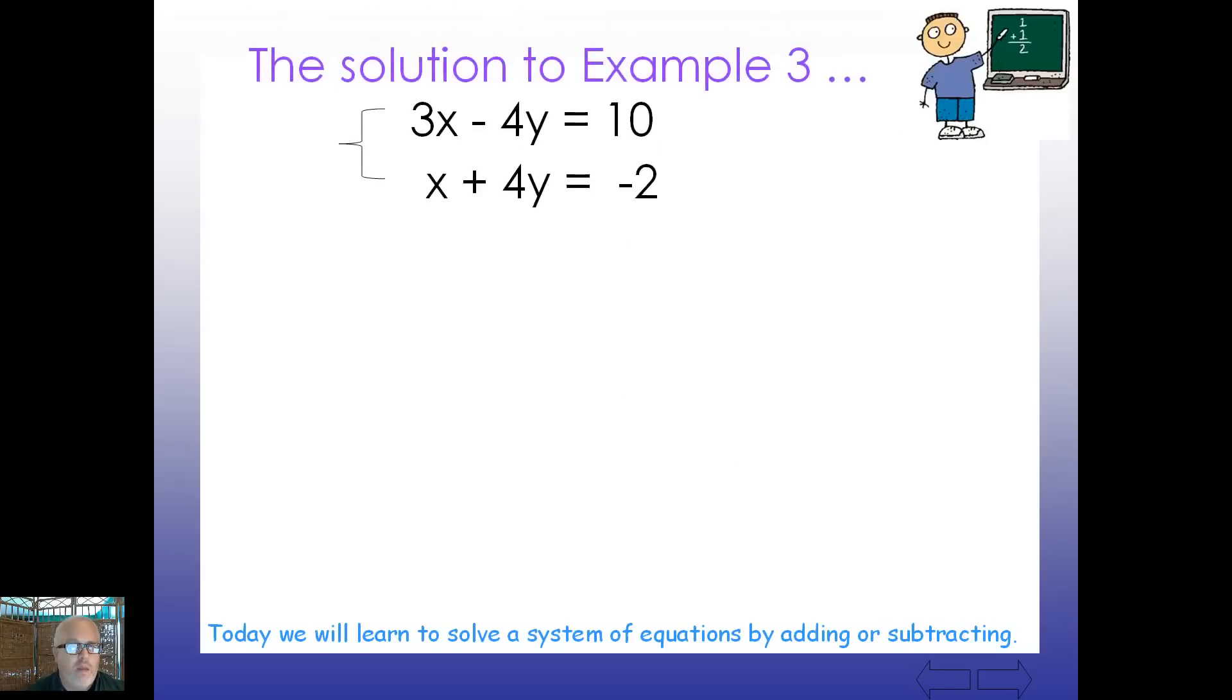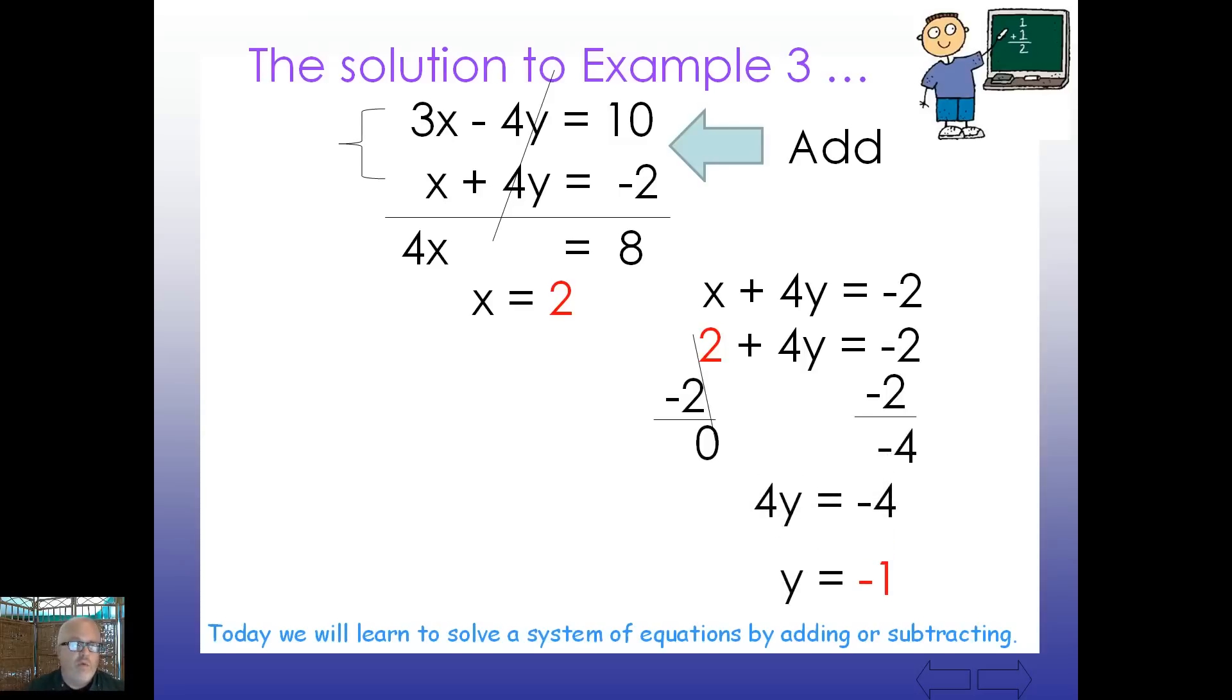What if we take this and we were to add straight down? Well, when we do so, what do you see about those Ys again? It looks to me like they're going to cancel out. And I get 4X equals positive 8. So what does X equal? 2. Now, you can choose the 2 in either equation. I'm going to take the bottom one. Plug it in there. And then simply solve for Y by getting rid of the 2 and eventually the 4. So what does Y equal? Negative 1. And I got an ordered pair of 2, negative 1. Hope you did the same.